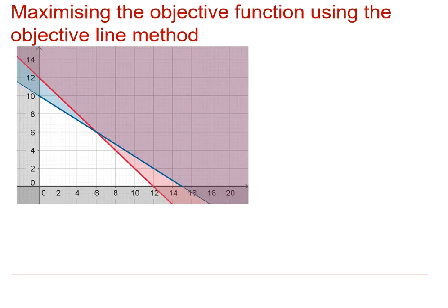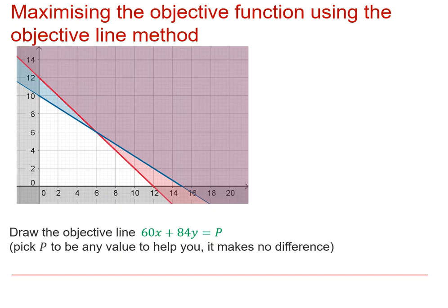So, I'm just going to briefly show you what the objective line method looks like. Now, the idea is that we, within the feasible region, somewhere within the feasible region, we draw a line of constant P.